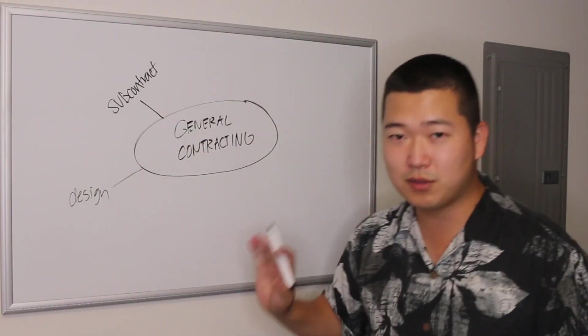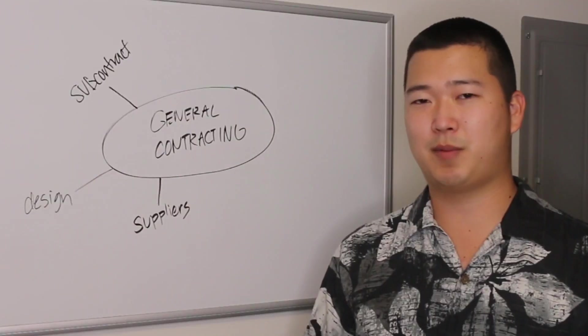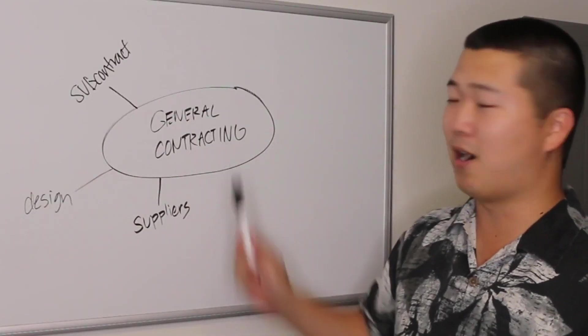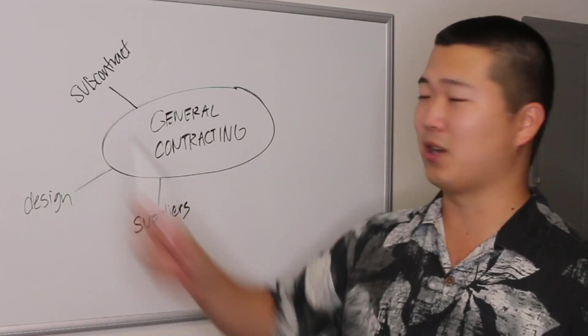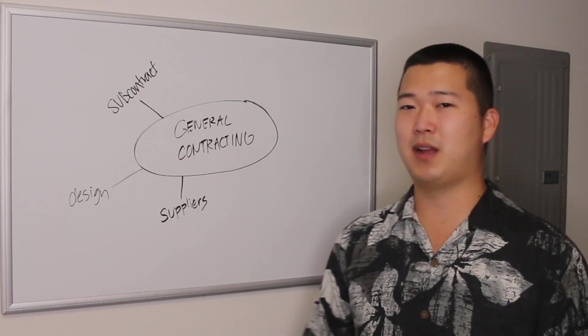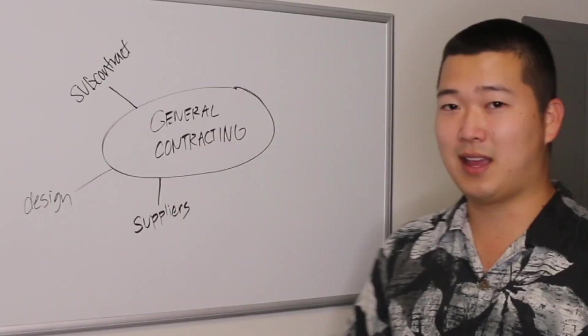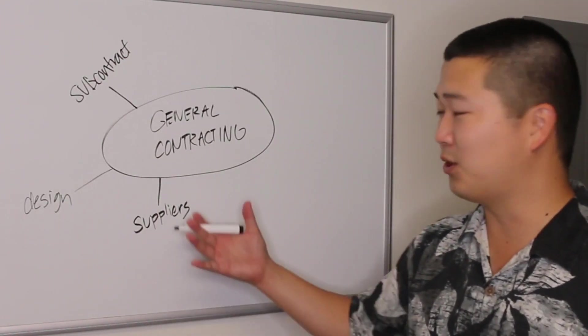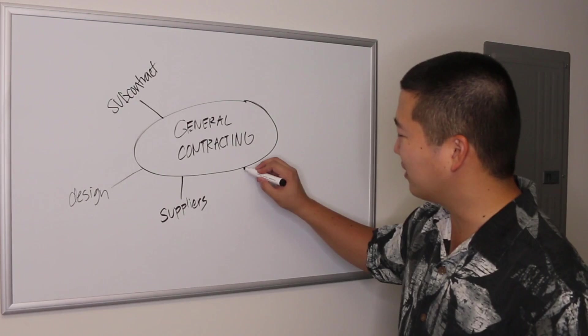Another place you can go similar to the subcontract is you can go to your suppliers. So a lot of people may do this if they really don't like the hours of general contracting. Or I've seen maybe the same thing like subcontracting. They're just really more passionate about one thing. So you can go work for the suppliers which have probably a little bit less of a demanding schedule. And that's all created by the relationships that you make as the general contractor.